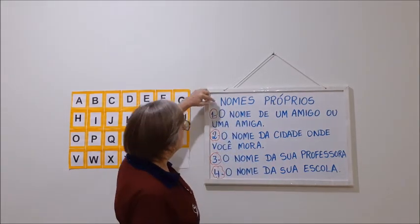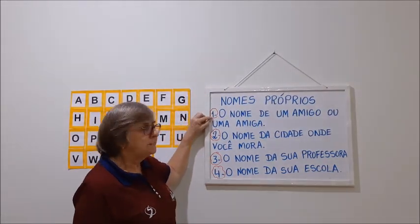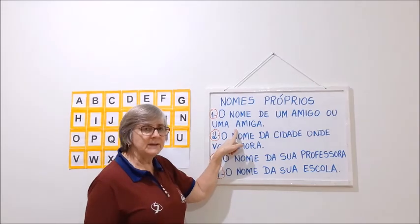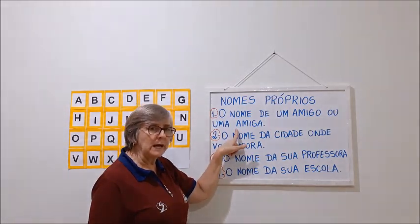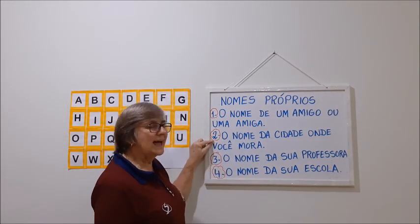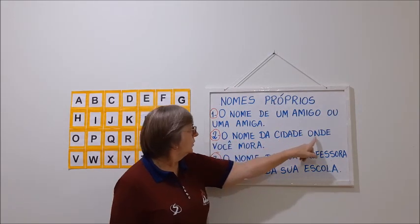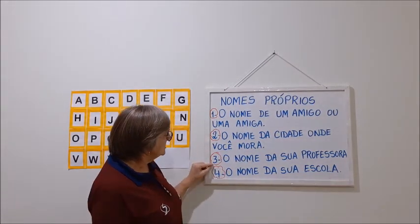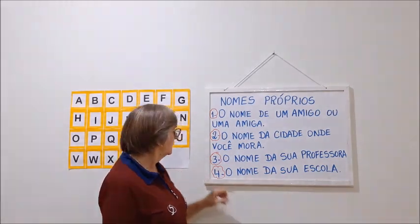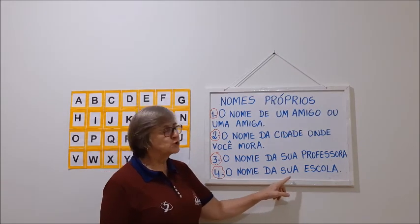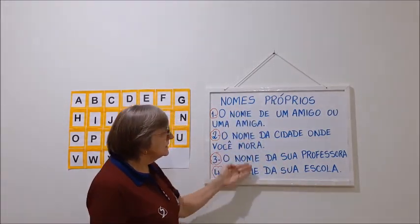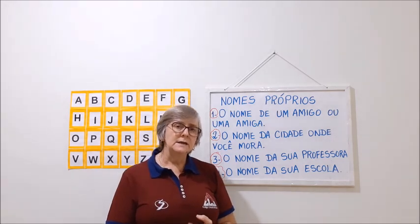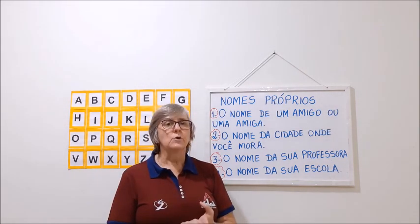Vai estar lá assim: nomes próprios. Primeira atividade que vocês vão responder: o nome de um amigo ou de uma amiga. Aí, você vai escrever qual é seu amigo ou amiga. É um nome só. Atividade dois: o nome da cidade onde você mora. Você vai escrever o nome da cidade que você mora. Atividade três: o nome da sua professora. Isso aqui você vai fazer no seu caderno, com letra caprichada, colocando a data e não esquecendo que nome próprio começa com letra maiúscula.